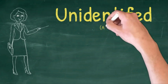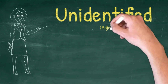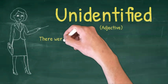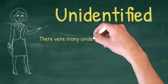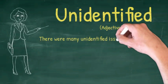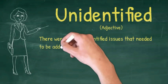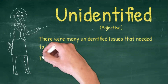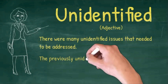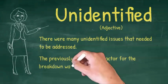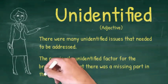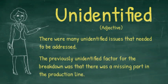The third way that we can use identify as an adjective is 'unidentified'. There were many unidentified issues that needed to be addressed. The previously unidentified factor for the breakdown was that there was a missing part in the production line.